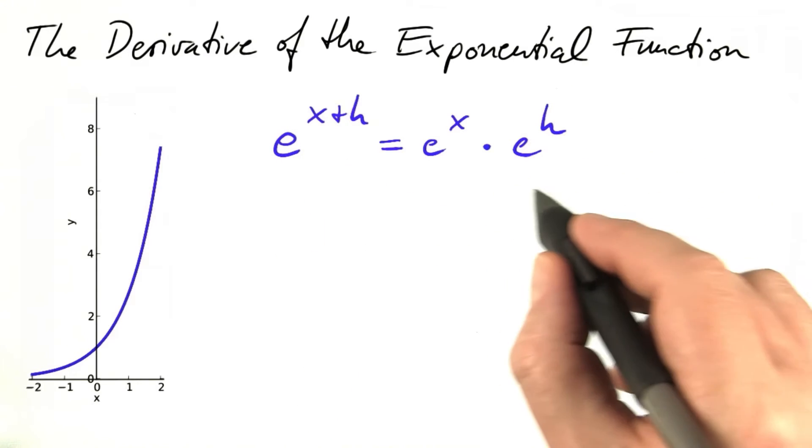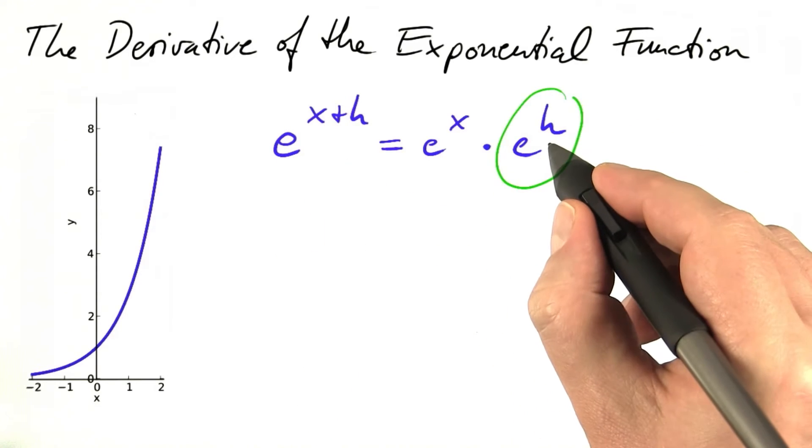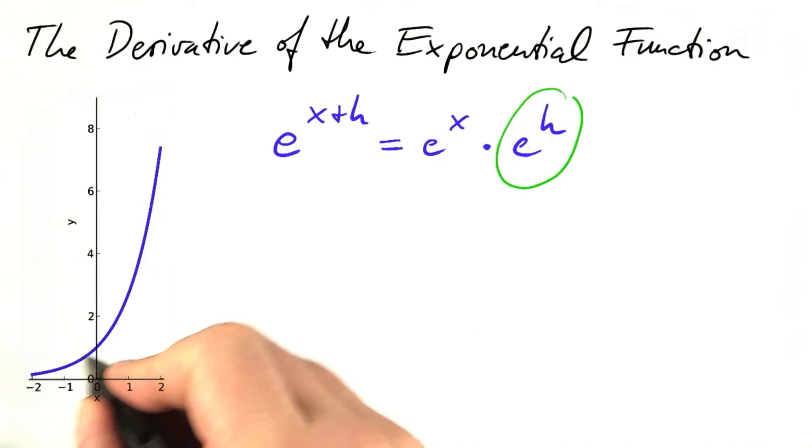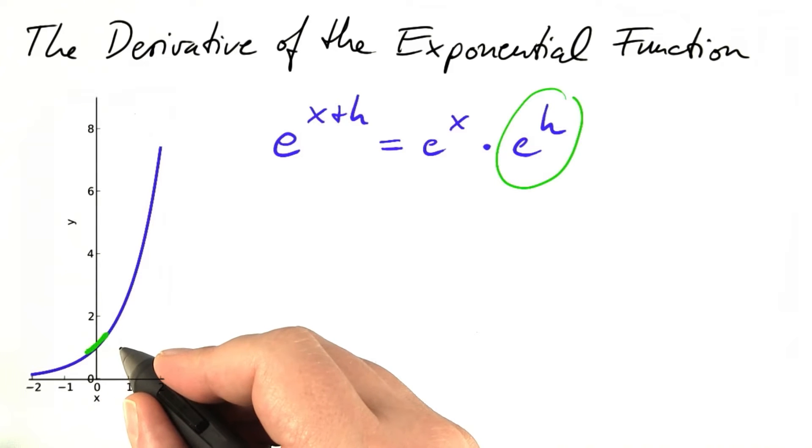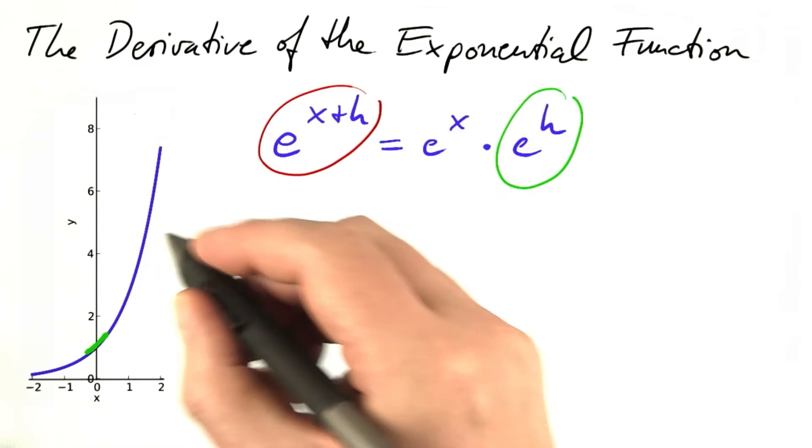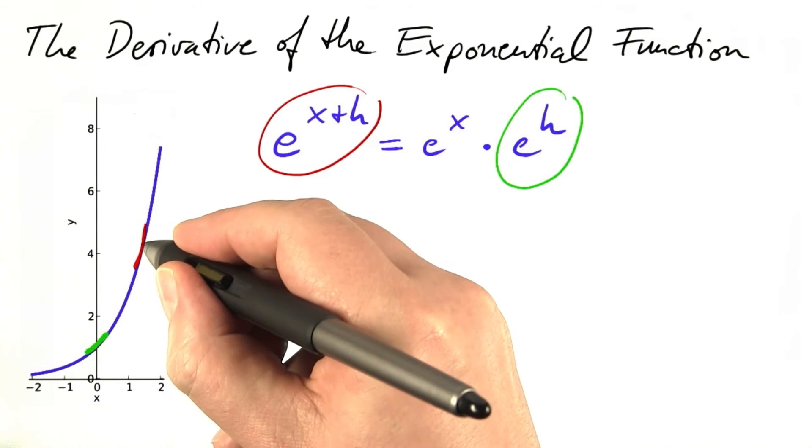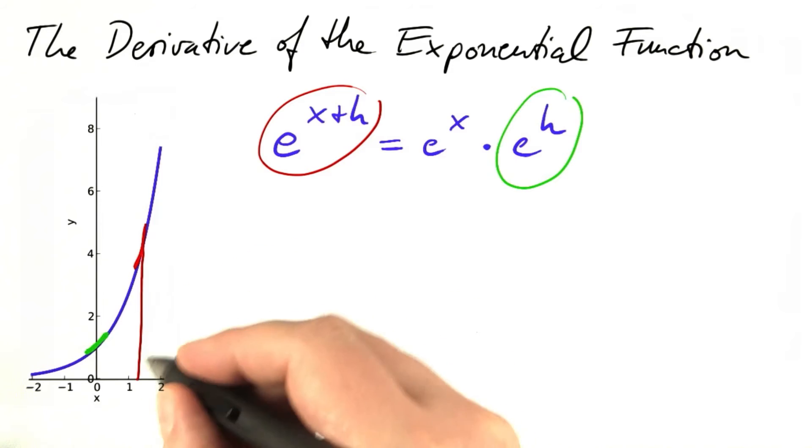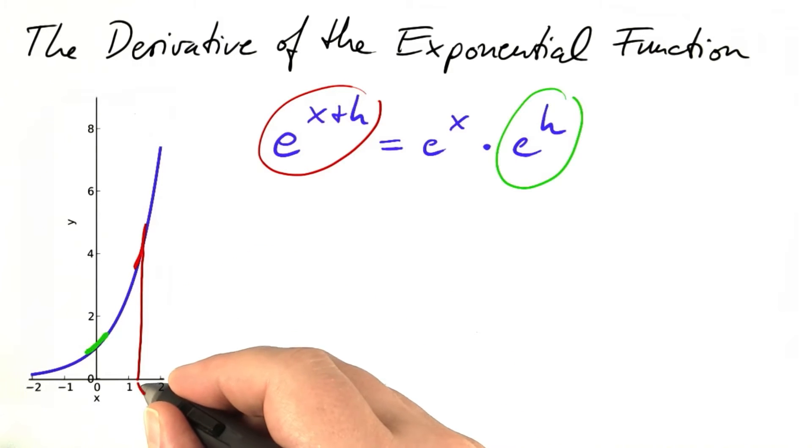Let's say h is a number close to 0. Then e to the h describes this part of the curve, of the exponential function. e to the power of x plus h describes some other part of that graph, one that's centered around the value of x.